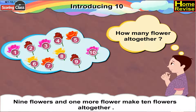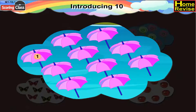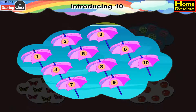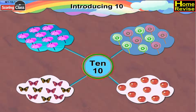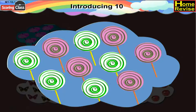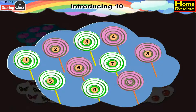Let us count these umbrellas: 1, 2, 3, 4, 5, 6, 7, 8, 9, 10. These are ten umbrellas. How many lollipops are there? 1, 2, 3, 4, 5, 6, 7, 8, 9, 10. These are ten lollipops.